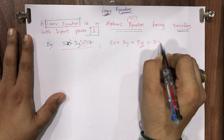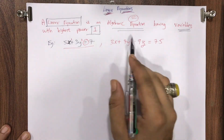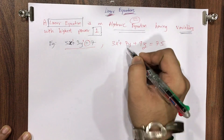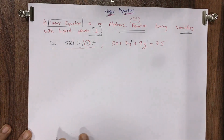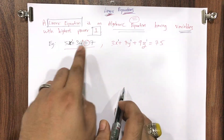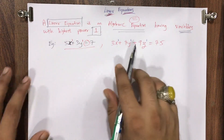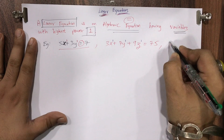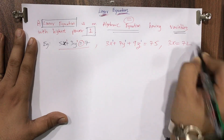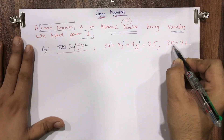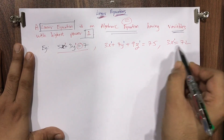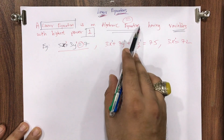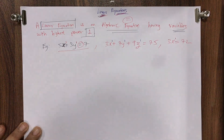Another example: 3x + 7y + 9z = 75. Here there are three variables — x, y, z. The highest power of each is 1 by default, so this is also a linear equation — specifically a linear equation in three variables. And 3x = 72 is a linear equation in one variable. A linear equation is an algebraic equation having variables with the highest power as one.